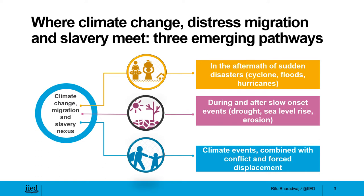The third pathway exists when climate events are combined with conflict. This final pathway normally occurs when forced displacement due to conflict is further precipitated by climatic events such as drought or famine. These circumstances or pathways can overlap or intersect, but similar dynamics were seen to drive vulnerability along all three pathways: firstly, climate change is worsening poverty and inequality, and secondly, it is placing people already in precarious situations where they reach the limit of coping capacity and are exposed to trafficking.